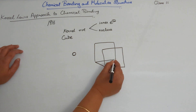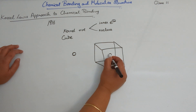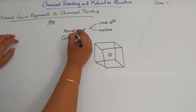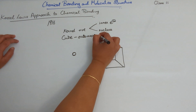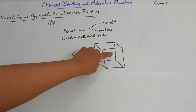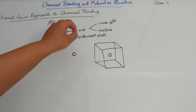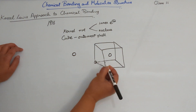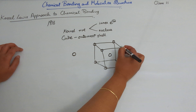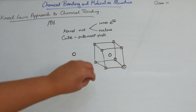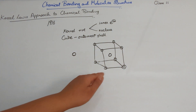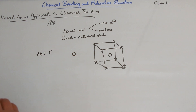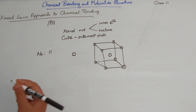The cube represents the outermost shell surrounding the positively charged kernel. Electrons occupy each of the eight corners of the cube — so there can be up to eight electrons occupying those corners. When all eight positions are filled, it corresponds to an inert gas configuration.